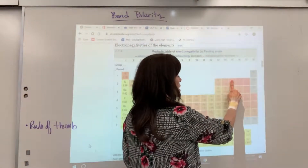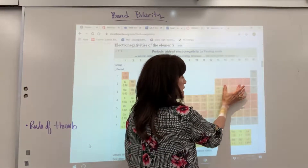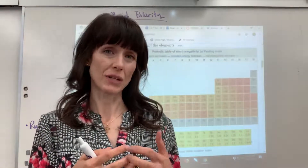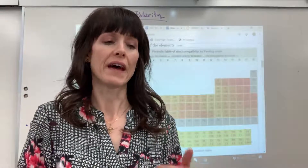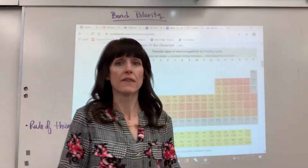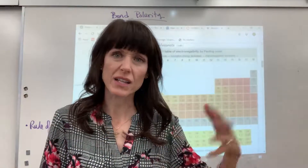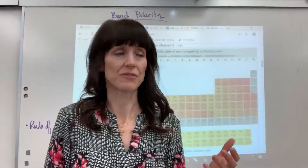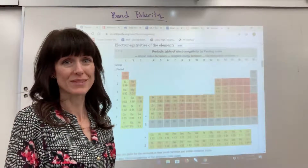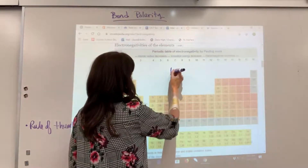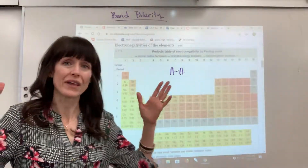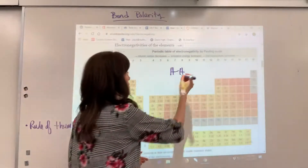If there is at least one element between the two atoms in the bond on the periodic table, their electronegativity differences are great enough that they won't share equally. Whichever element is closest to fluorine will attract and hog the electron, causing the partial negative. Applying this to our examples: hydrogen-hydrogen — same element, identical electronegativities — nonpolar.